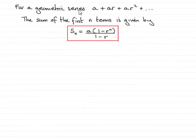Now, if you have a geometric series a + ar + ar² + and so on, then the sum of the first n terms is given by this equation here: S_n equals a multiplied by 1 minus r to the power n, all divided by 1 minus r, where a is the first term and r is the common ratio.